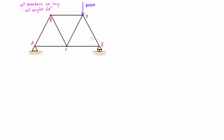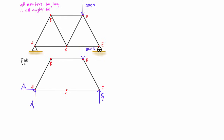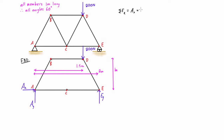The first thing we need to do for the method of joints is to draw a free body diagram of the entire structure. We can then find the reaction forces at A and E. Taking the sum of forces in the x-direction, that's just Ax, which equals zero. Taking the sum of forces in the y-direction, we have negative 200 newtons — that's the applied force down — plus Ay plus Ey, all equal to zero.